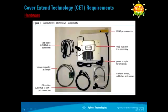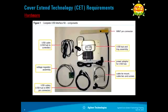This picture shows the complete USB Interface Kit. In this kit, there are the USB cable, the voltage regulator assembly, the cable ties and screw, the USB hub, the power adapter for the USB hub, and the MIM pin connector. These parts are upgraded onto the ASRU card and tester to make them available for use with CET.